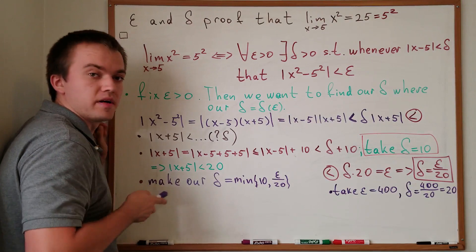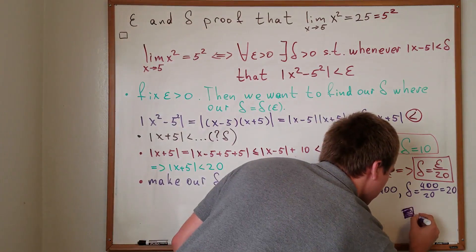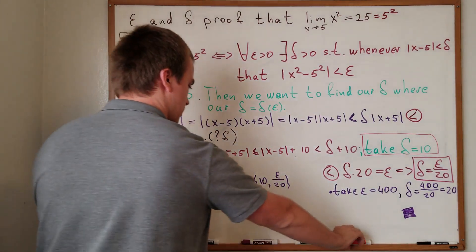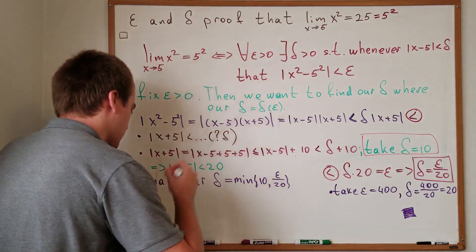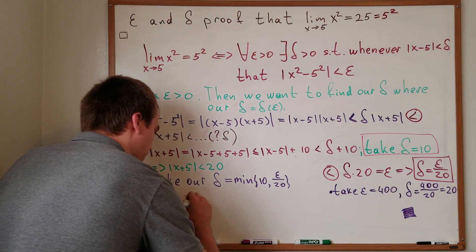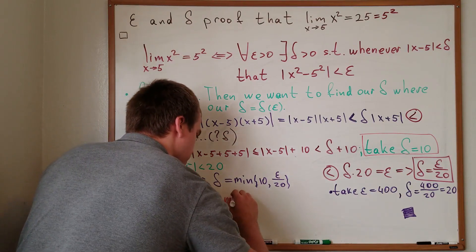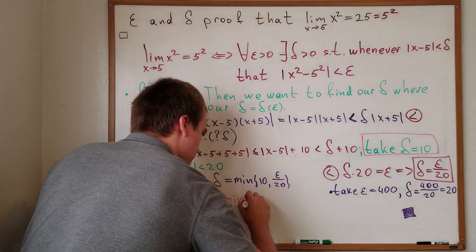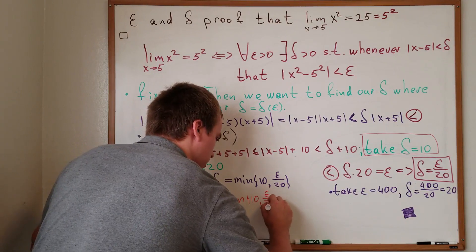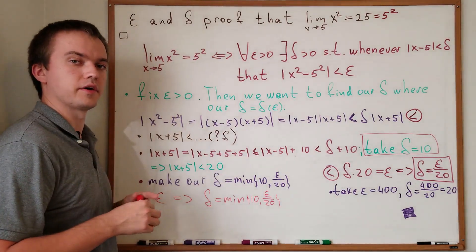So from here we are basically done. For any given epsilon, our choice of delta is the minimum of 10 and epsilon over 20. Thank you for watching.